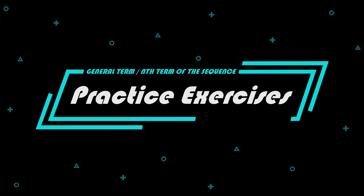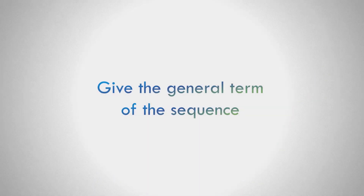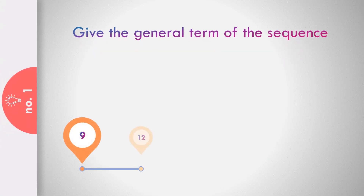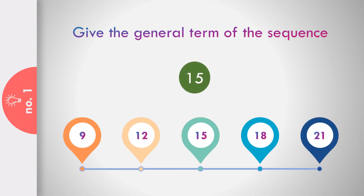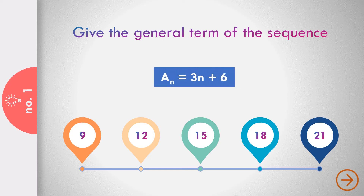Let us try some exercises on the general term and the nth term of the sequence. Give the general term of the sequence 9, 12, 15, 18, and 21. The answer is a sub n equals 3n plus 6.